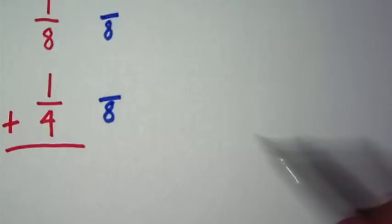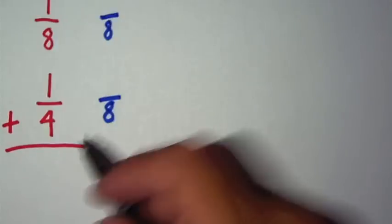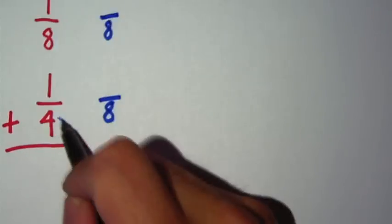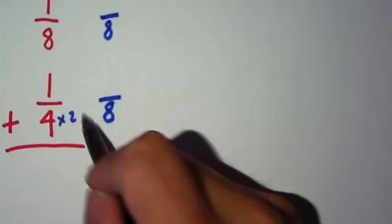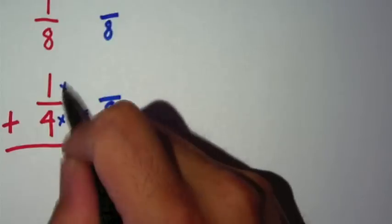Now how do I find my numerator? Very simply I multiply 4 times what number equals 8? 4 times 2. What I do to the bottom I must do to the top. 1 times 2 equals 2.